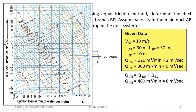This is the friction chart. On the x-axis, friction loss in mm of water per meter is given. On the y-axis, air volume in cubic meters per second is given. The inclined lines are lines for constant velocity — this line is for 2 m/s, this for 3 m/s, this for 4, 5, 6, and so on. The other inclined lines are constant diameter lines: this line is for 100 mm diameter, this for 125 mm, this is 150 mm, and so on.